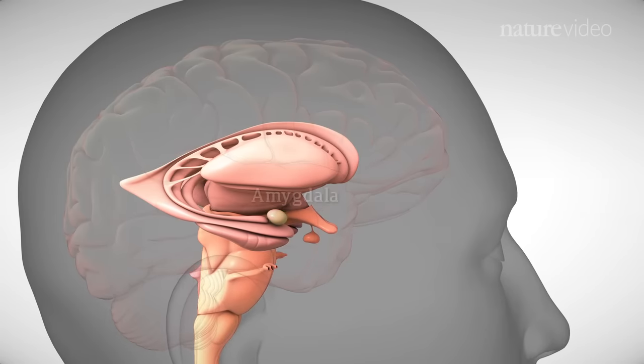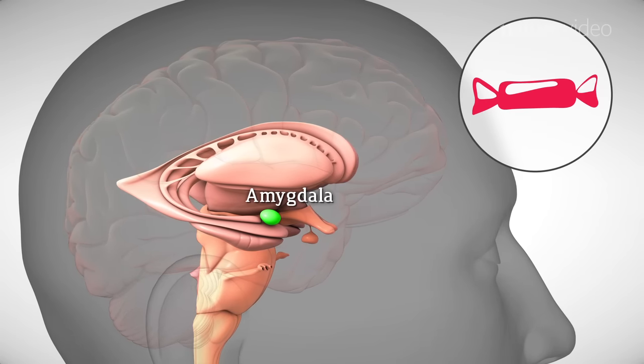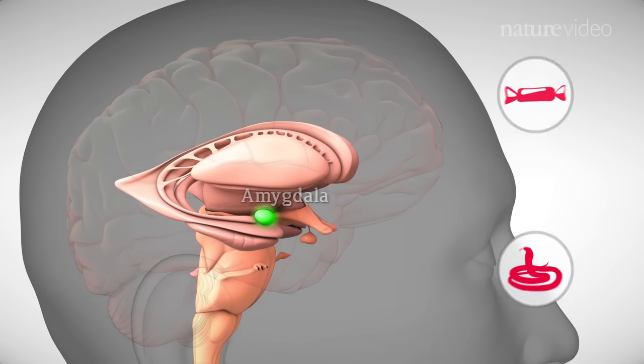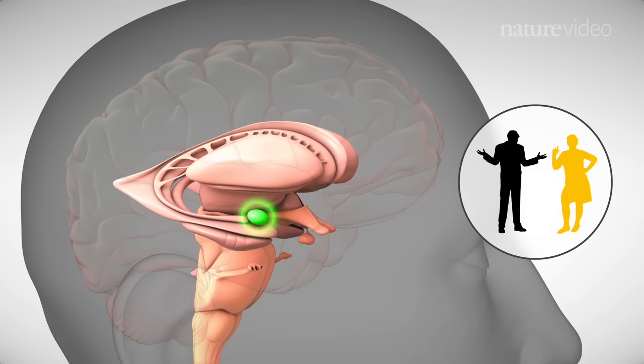Located deep within the brain, the amygdala processes highly salient stimuli such as rewards and potential threats. In depression, the amygdala is overactive and responds excessively to negative events.